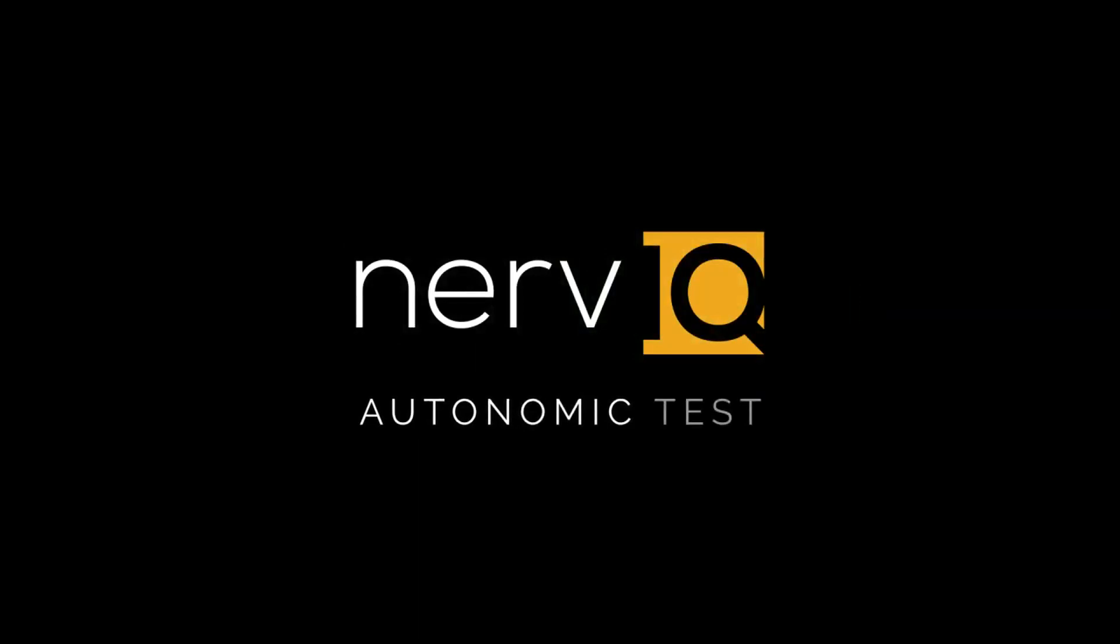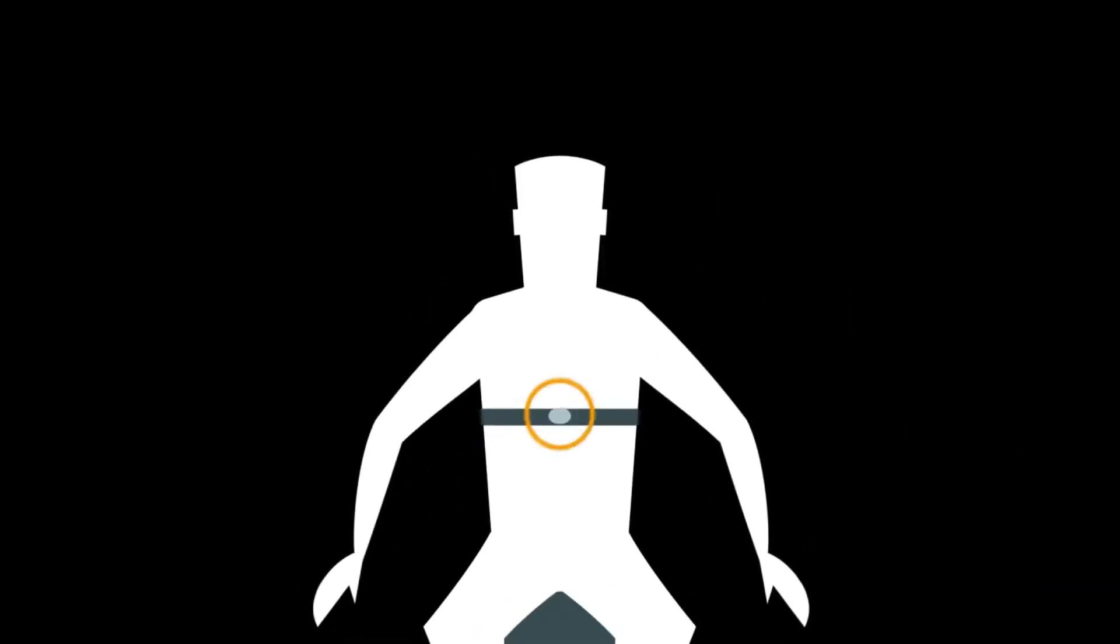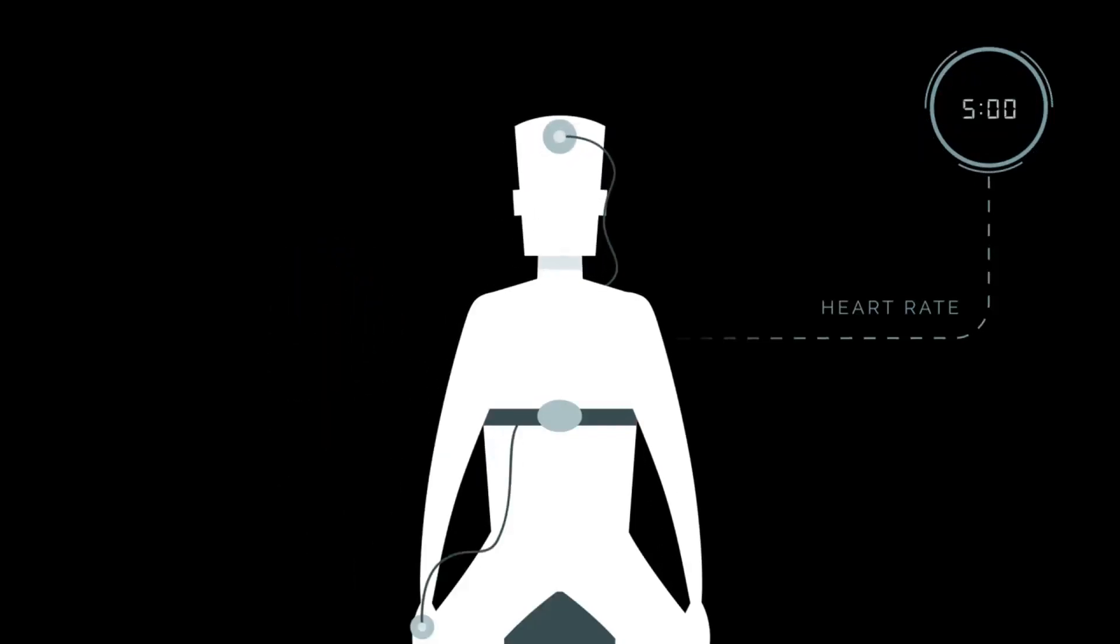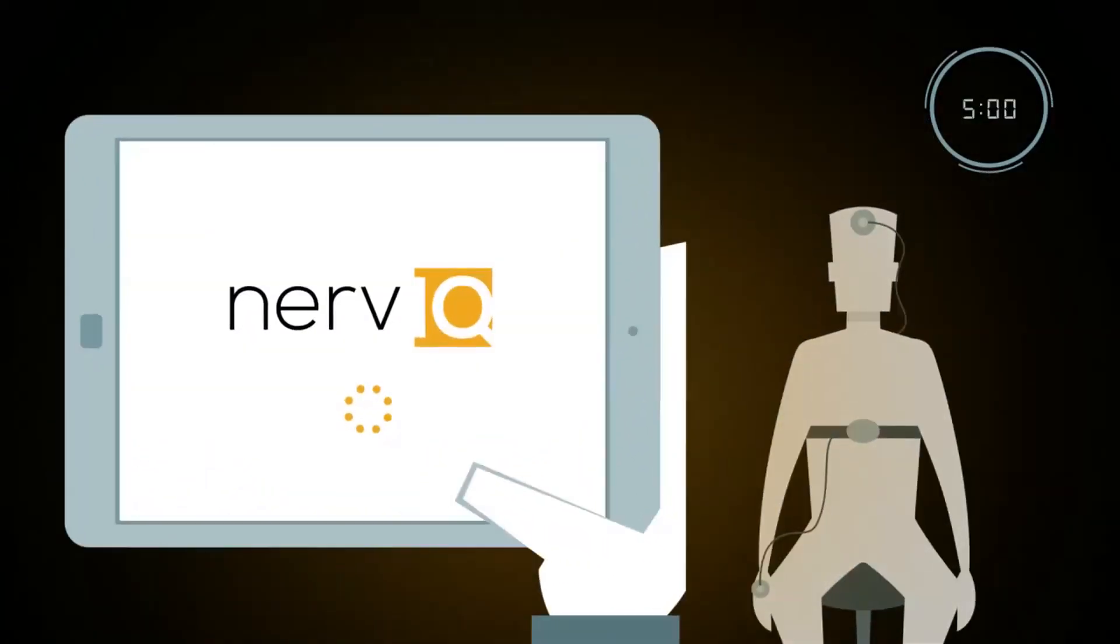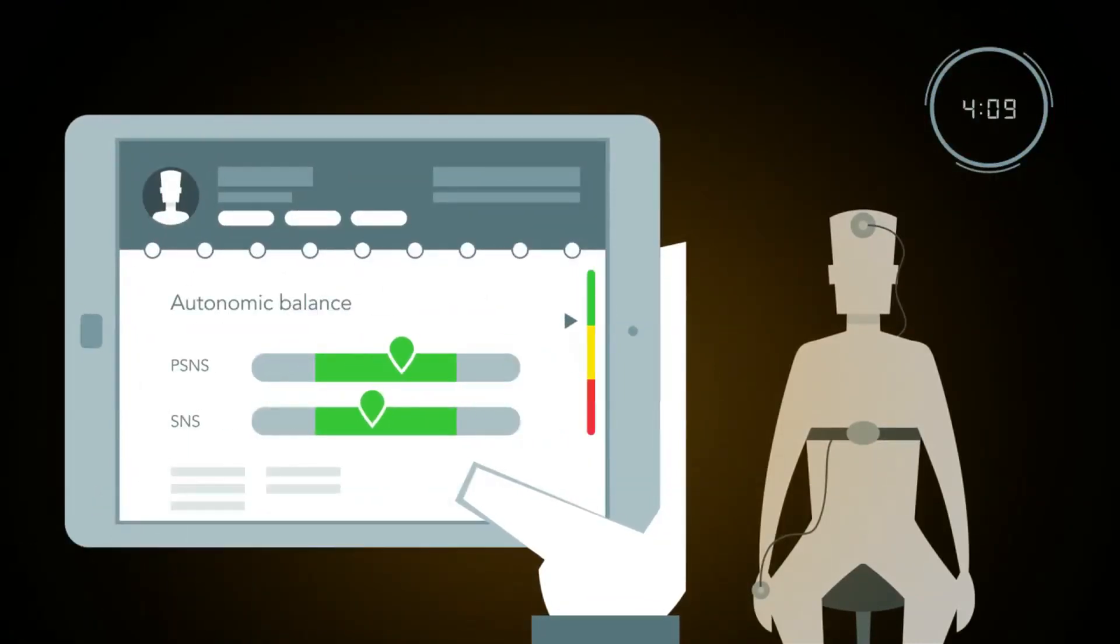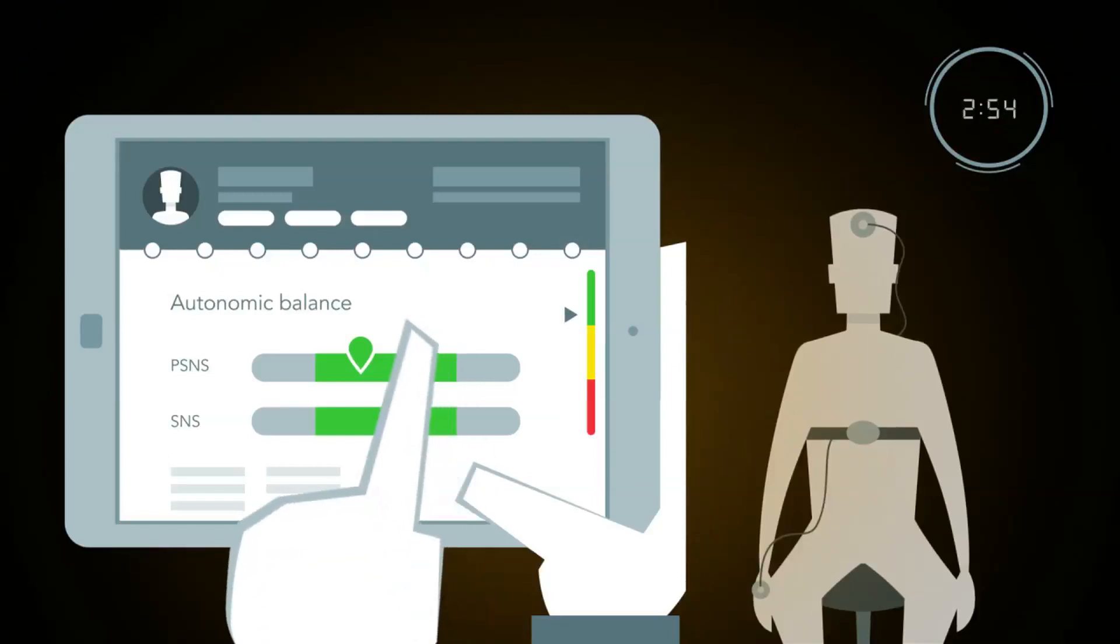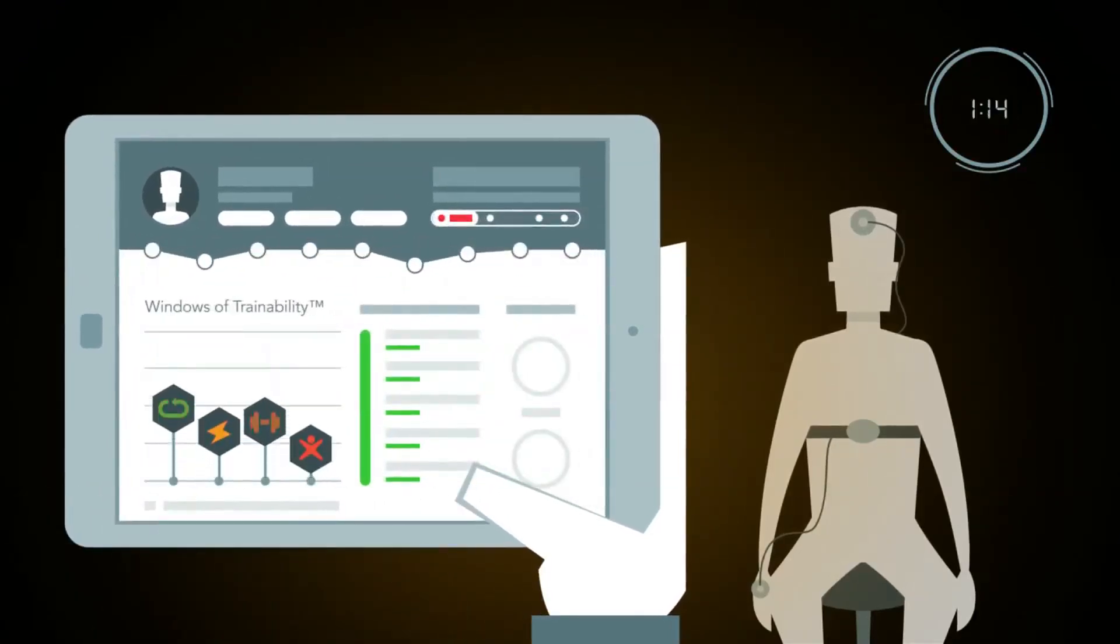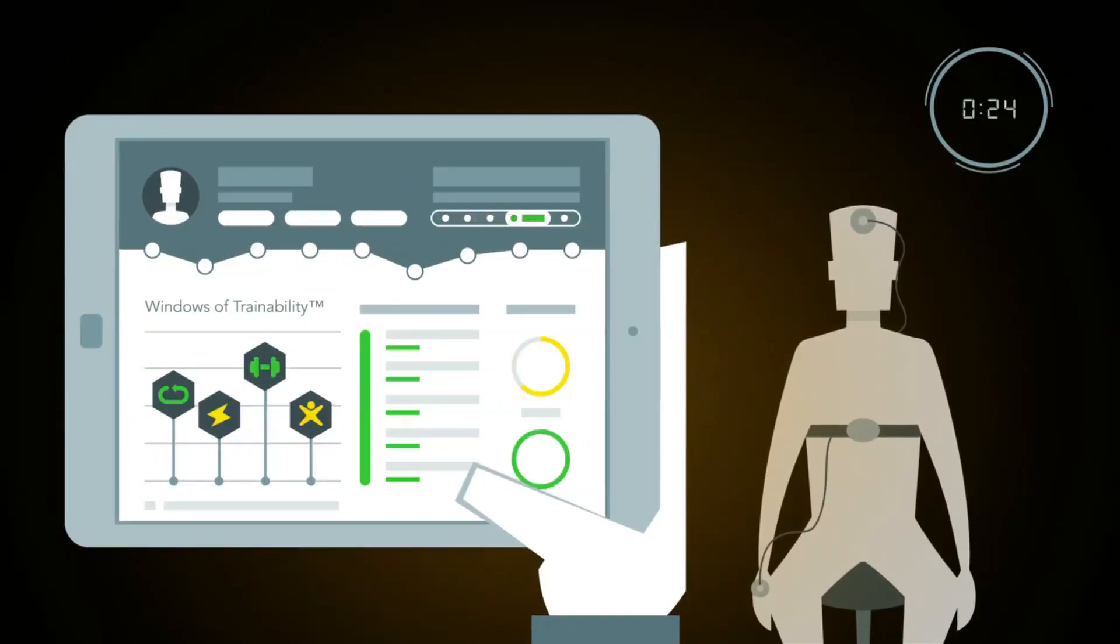Introducing the Nerve IQ Autonomic Test. A revolutionary, simple, non-invasive way to measure your heart rate over five minutes. And using a patented, unique algorithm will identify your sympathetic and parasympathetic function, your brain's ability to cope with stress and your body's ability to cope with different types of exercise.